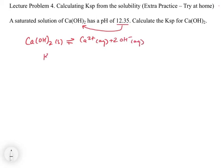We can write our Ksp expression, which is that Ksp is going to equal the concentration of calcium 2 plus times the concentration of hydroxide squared.